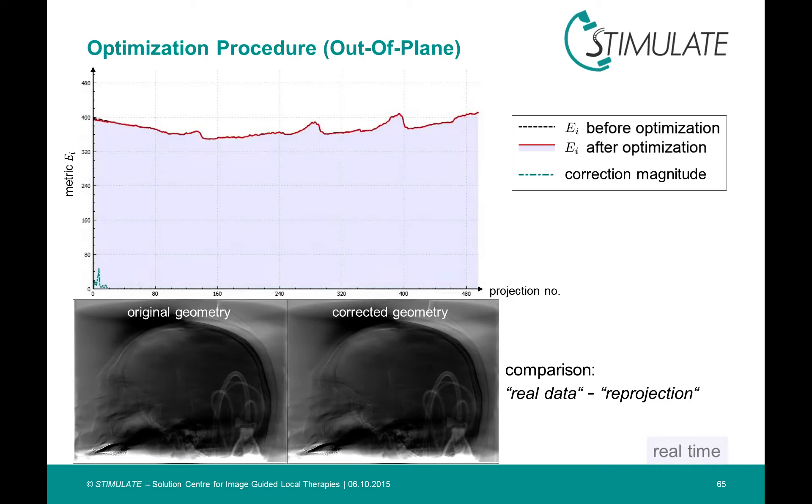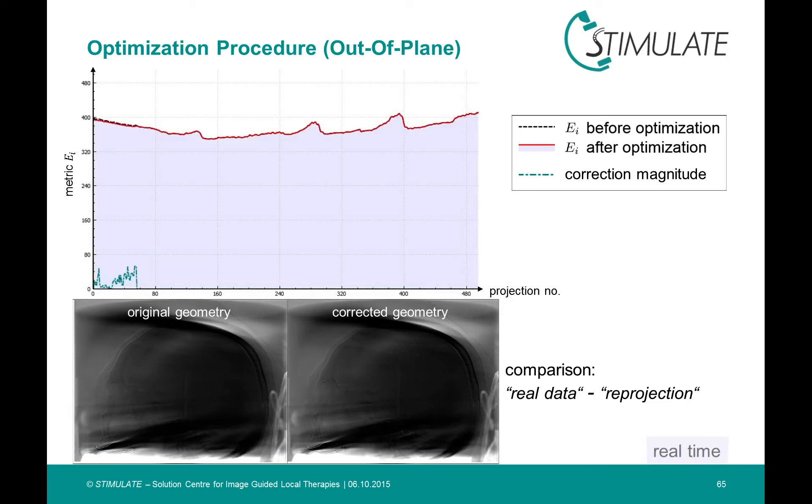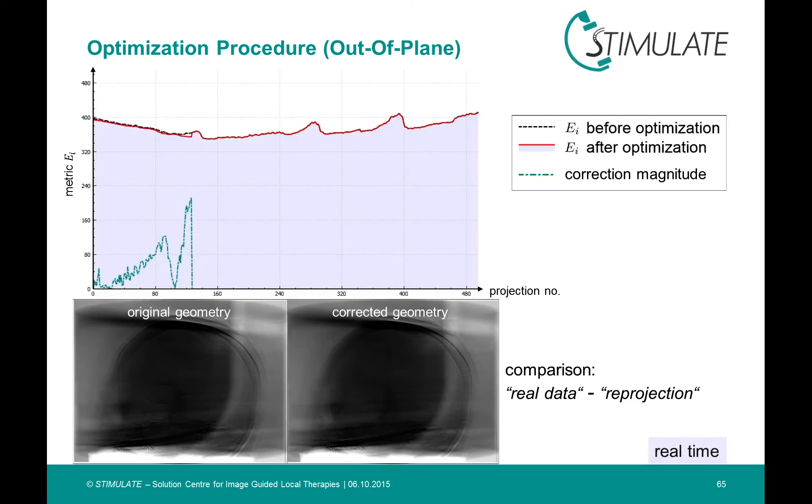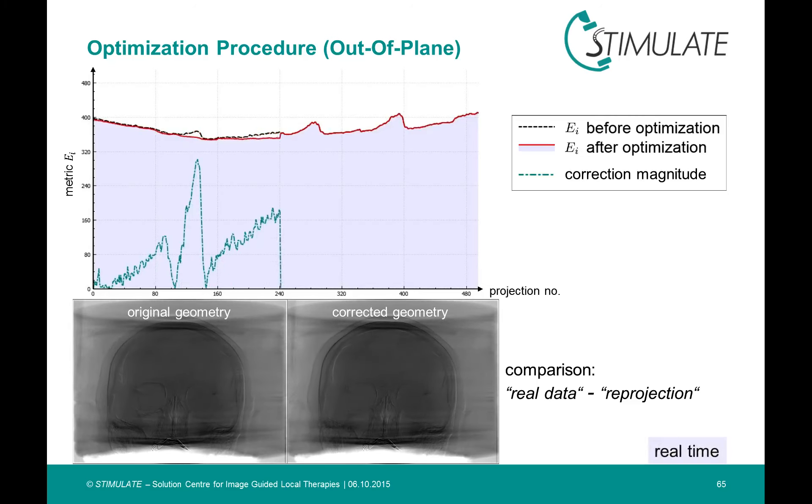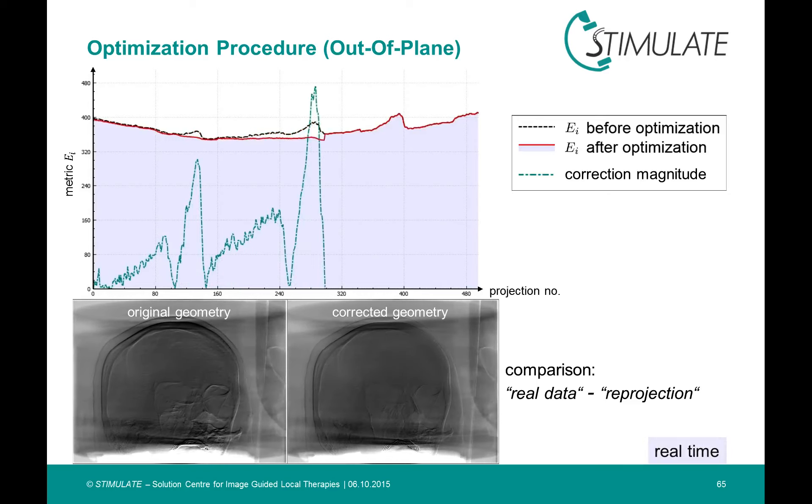If you look closely, you can appreciate mismatches in the original geometry, especially during the peaks in the matrix. This mismatch is reduced for the corrected geometry on the right side.